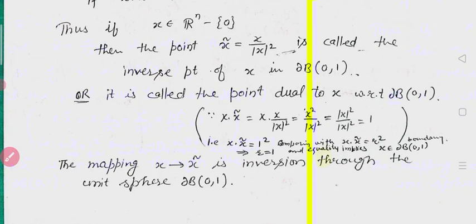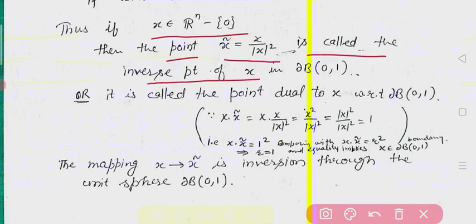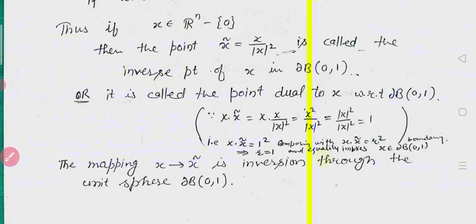Thus if x belongs to ℝⁿ minus {0}, then x̃ will be given by x divided by |x|². This is called the inverse point of x through the boundary of the unit ball — or equivalently, through the unit sphere.